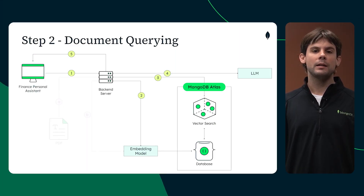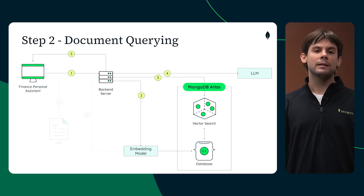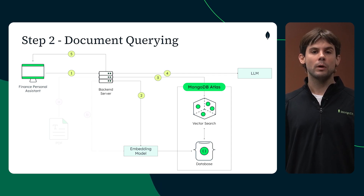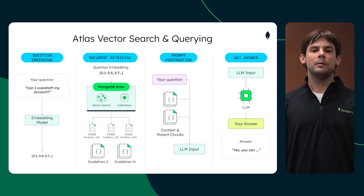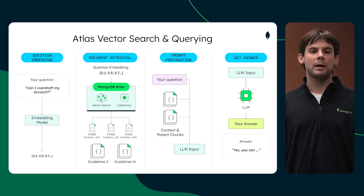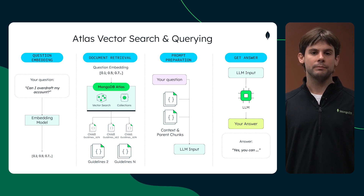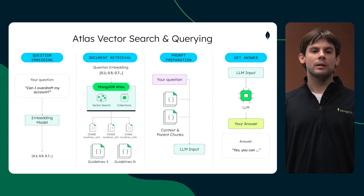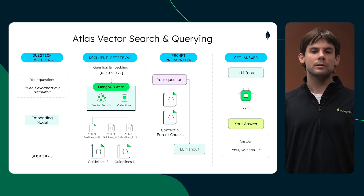This is what one of our documents looks like after we have stored both the chunks and their embeddings in MongoDB. We can begin leveraging MongoDB Atlas Vector Search for semantic querying. The next step involves building an application — in our case, an interactive chatbot. This chatbot is powered by MongoDB Vector Search and an appropriately trained LLM. When a user inputs a question, that question is first vectorized.